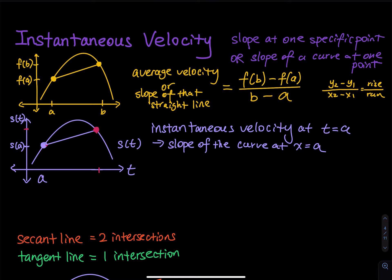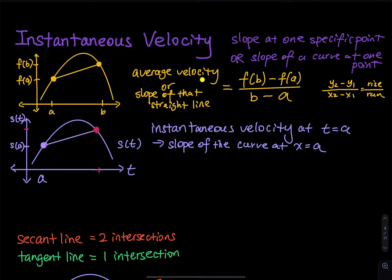First, you need to start with two points. Whenever we use two points, we have to talk about average velocity, which I already covered in the previous video. So on the first graph, I have something that looks like a parabola with two points: one at a and one at b, with corresponding y-values f(a) and f(b). I sketch a straight line between them. I am asking you to find the average velocity between time interval t equals a and t equals b.